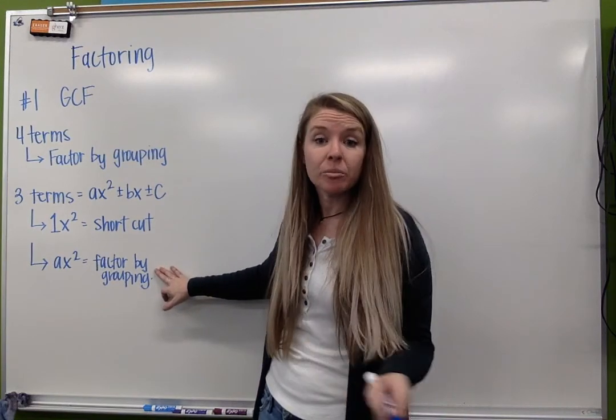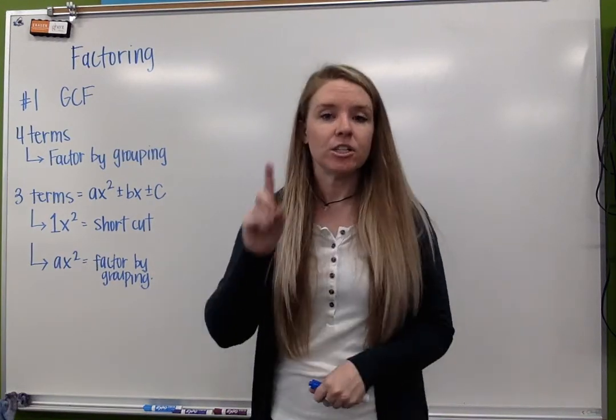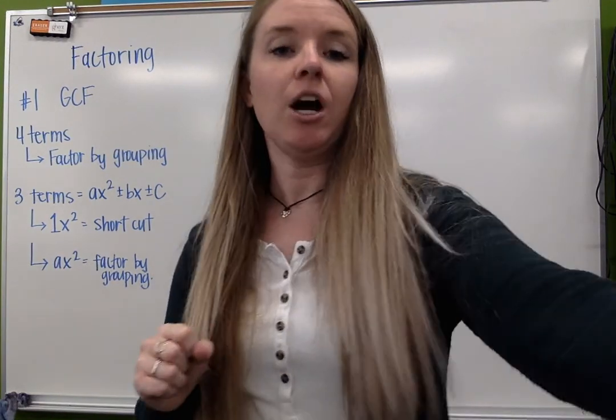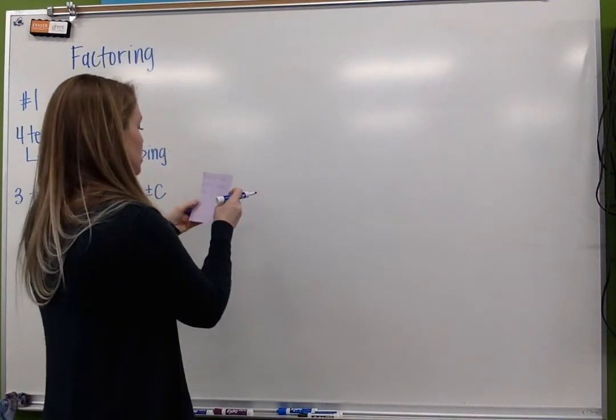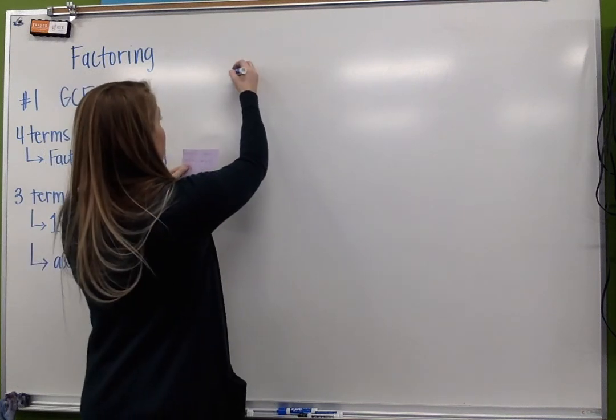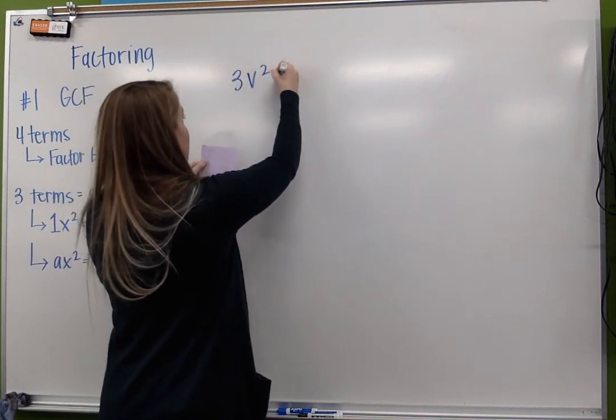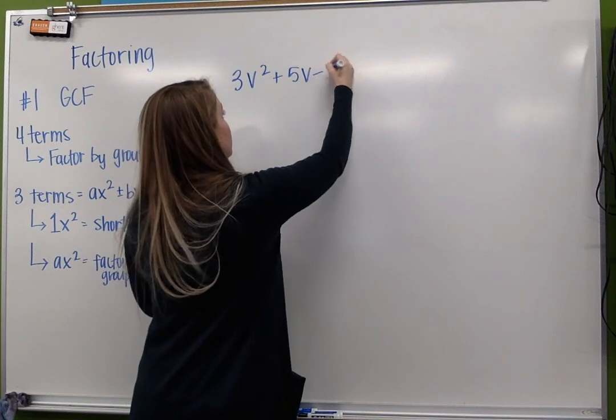We're going to be factoring by grouping. We know how to do that. There's just one thing that we've got to learn. So we're going to look at a couple of examples and see how you feel. So we're going to start with this example: 3v² + 5v - 8.